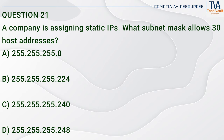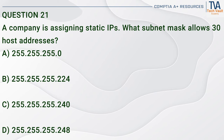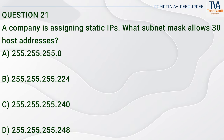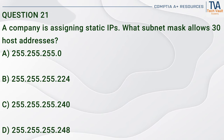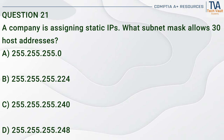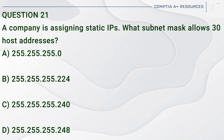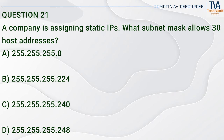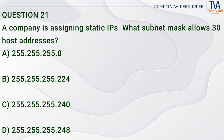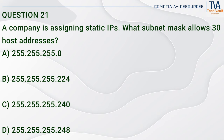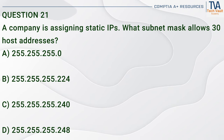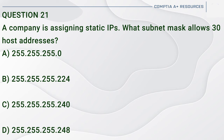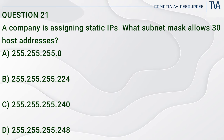Question 21. A company is assigning static IPs. What subnet mask allows 30 host addresses? A. 255.255.255.0. B. 255.255.255.224. C. 255.255.255.240. D. 255.255.255.248.